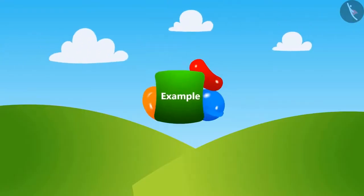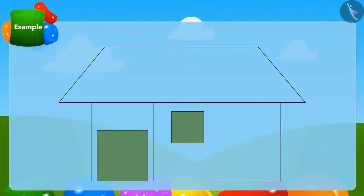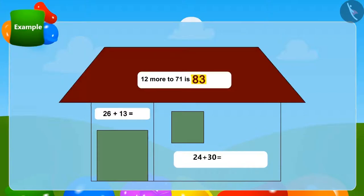Children, we will play a fun game and let us try the method we learned in the previous lesson. Some puzzles are written in this house. Can you solve these puzzles by the method of quickly adding two-digit numbers? With the correct answers to the puzzle, that part of the house will be filled with color.